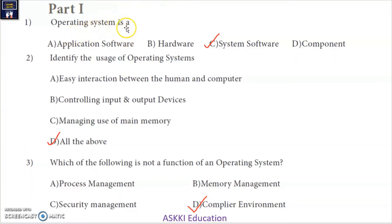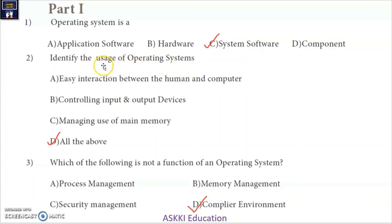First question: Operating system is a — the answer is system software. Second question: Identify the usage of operating systems. The usage is easy interaction between the human and the computer, and this interaction is only through the operating system.